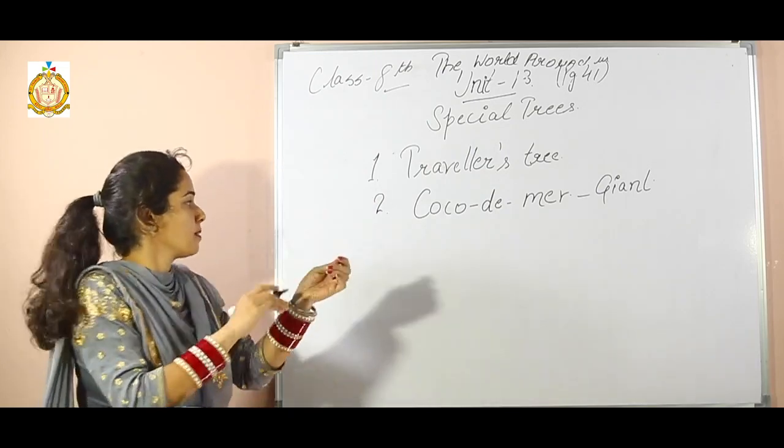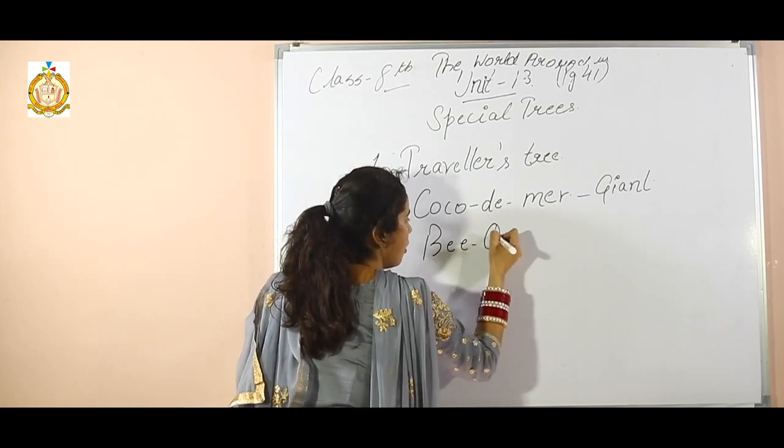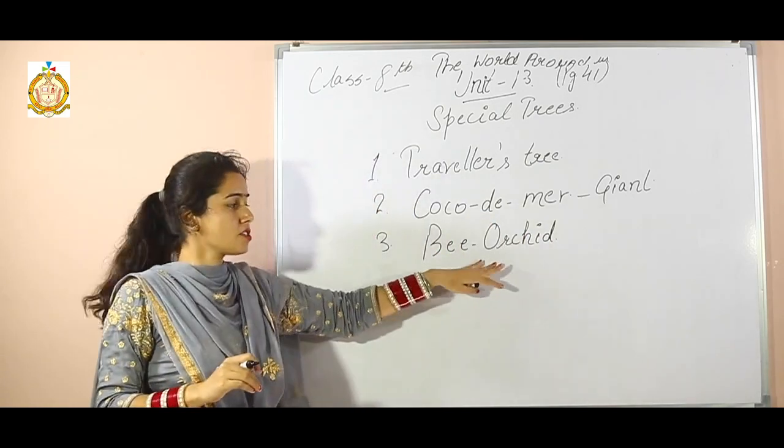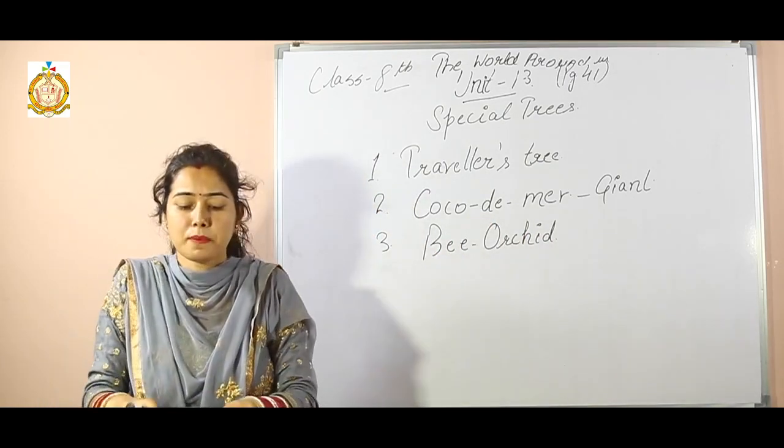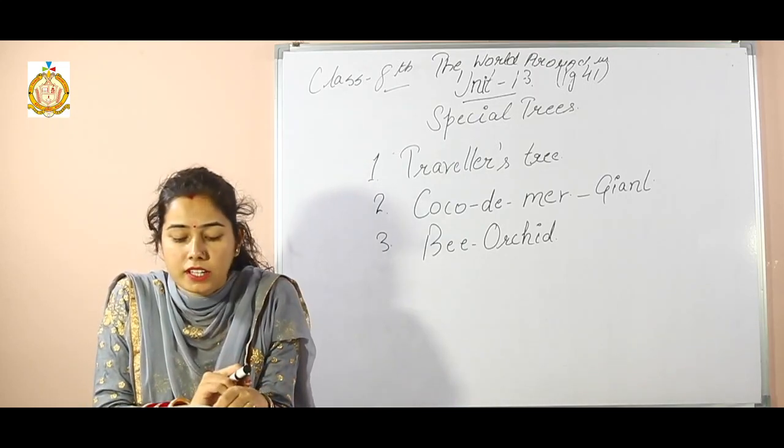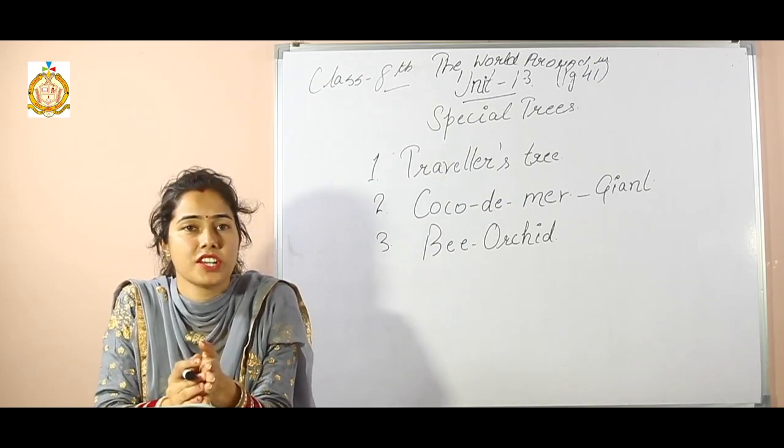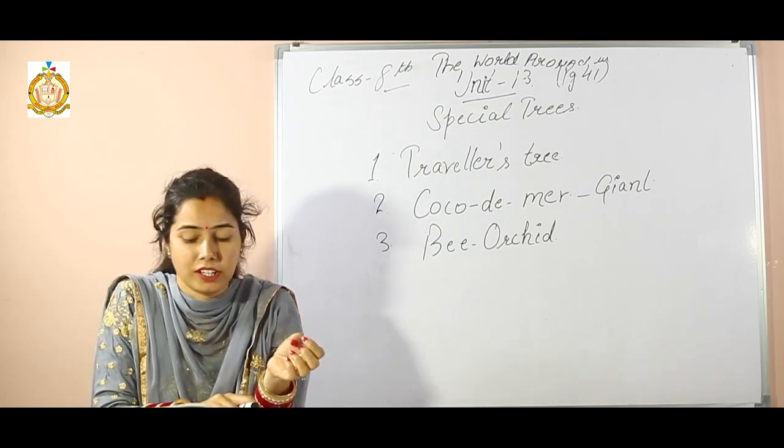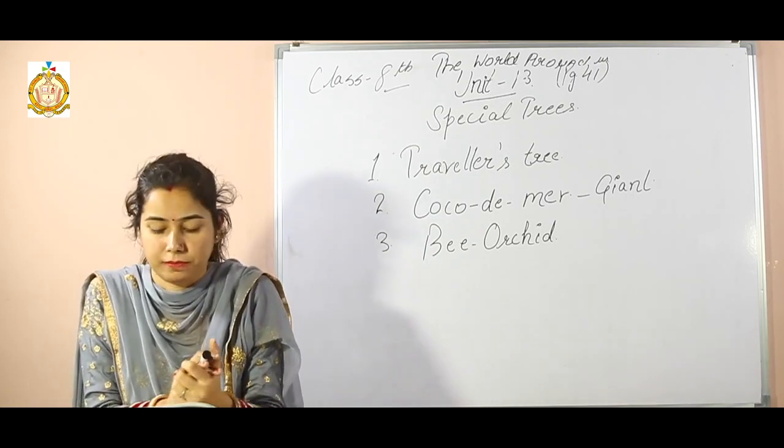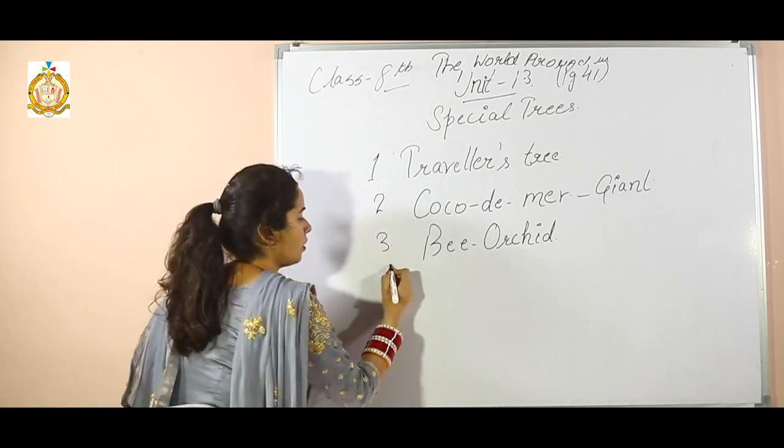The third one is bee orchid. What are the special characters? This plant does a brilliant job of mimicking a bumblebee. Consequently, the insect gets drawn in, thinks it is a potential mate, but leaves disappointed. This is a special character that helps in pollination.